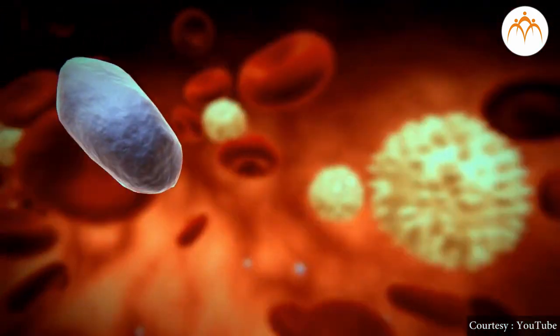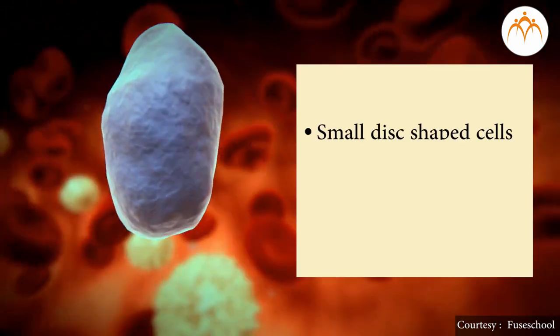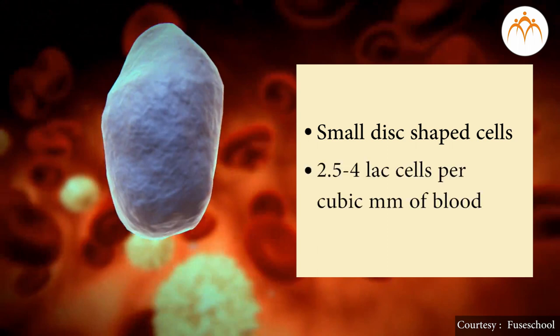Blood platelets, or thrombocytes, are very small disc-shaped cells. Usually 2.5 to 4 lakh cells are present in one cubic millimeter of blood. But sometimes the count of platelets may decrease drastically — this may happen if a person suffers from infections like malaria or dengue. Thus, all the blood cells play important functions in our body.